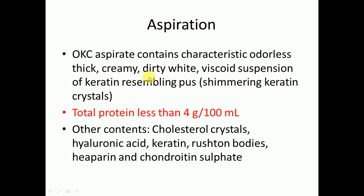On aspiration, OKC contains a characteristic odorless, thick, creamy, dirty-white viscoid suspension of keratin resembling pus. Total protein is less than 4 grams per 100 ml — in contrast to dentigerous cyst where total protein is more than 4 grams per 100 ml. Other contents include cholesterol crystals, hyaluronic acid, keratin, Rushton bodies, heparin, and chondroitin sulfate.